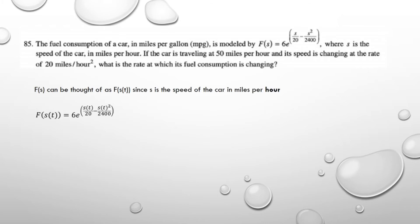Next, we can replace S of T for S in the equation to get 6 times e to the S of T over 20 minus S of T squared over 2400.